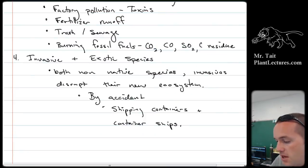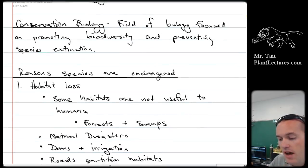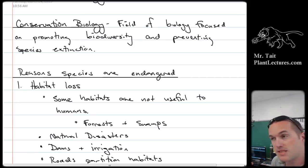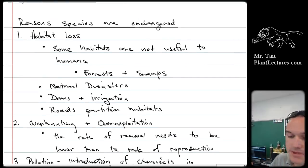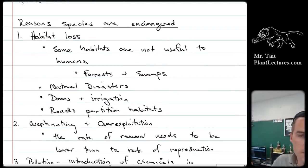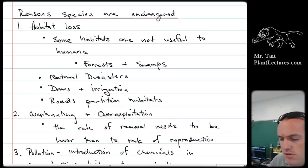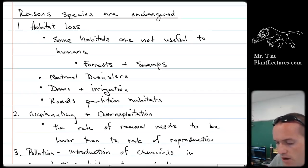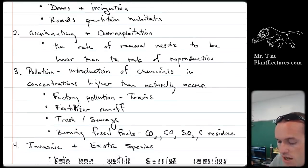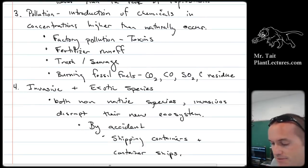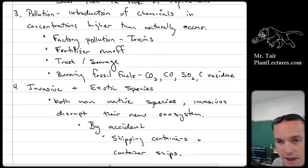The last thing we talked about was conservation biology. Ecosystems are more robust with greater biodiversity. Organisms are going extinct at a very high rate now due to four things: habitat loss, over-hunting and over-exploitation, pollution, and invasive and exotic species. And that was AP Biology.